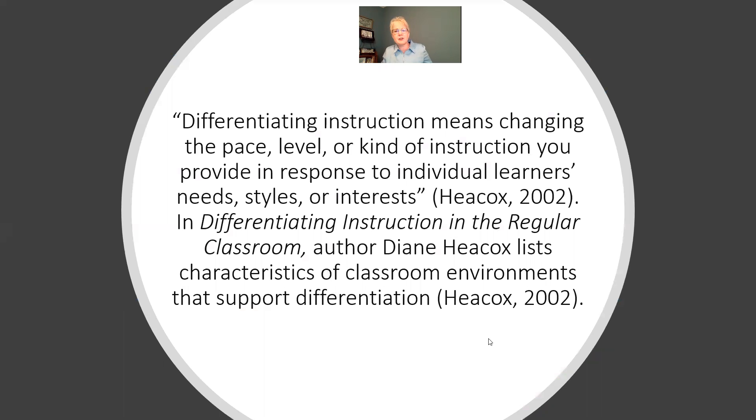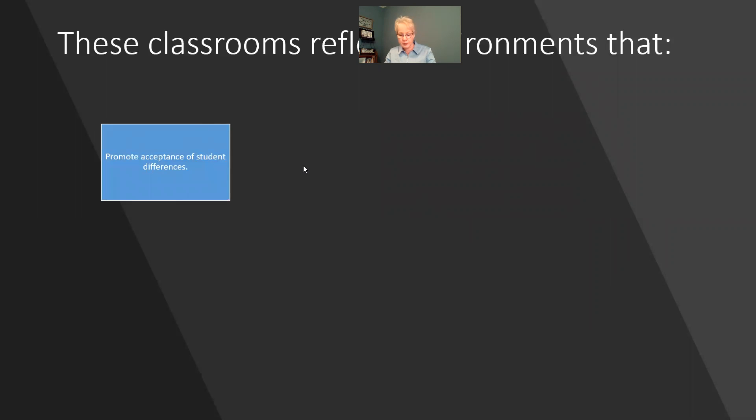Let's talk about a definition by Hecox from this book: differentiating instruction means changing the pace, level, or kind of instruction that you provide in response to individual learners' needs, styles, or interests. She also lists the characteristics of classroom environments that support differentiation. Classrooms that are great for differentiated learning first of all promote the acceptance of students with visible differences. Like we talked about in the previous lecture, by modeling the acceptance that the teacher has for these students who are different, the other students in the classroom will generally follow the example.